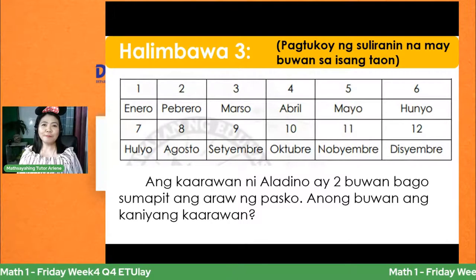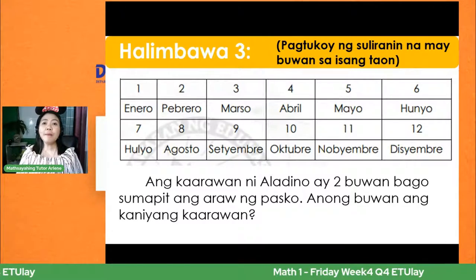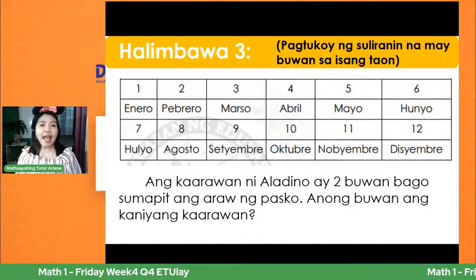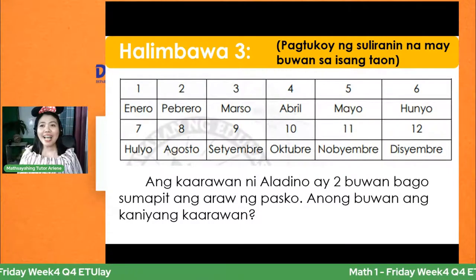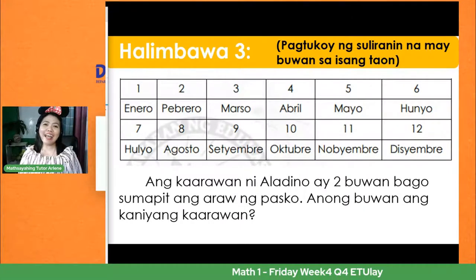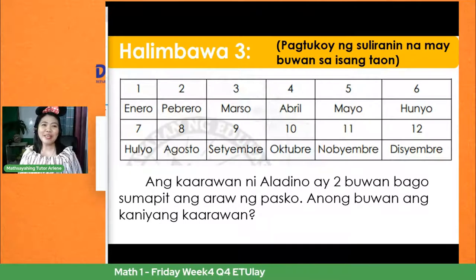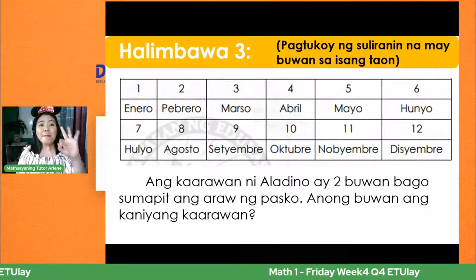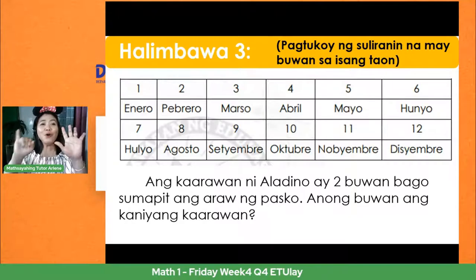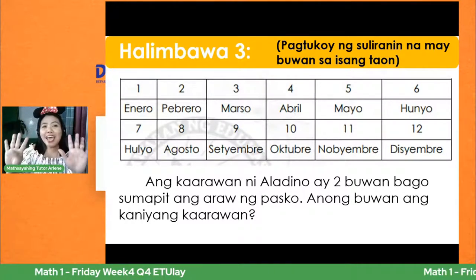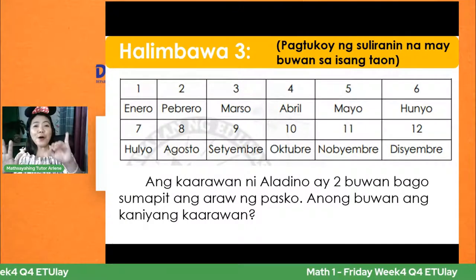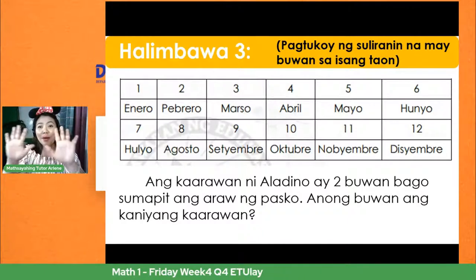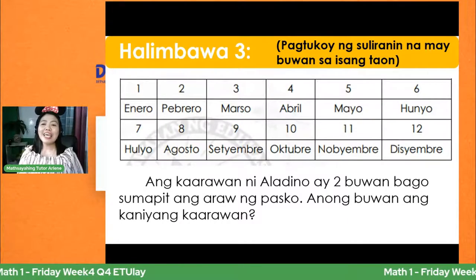Ikatatlo nating paglutas: pagtukoy ng suliranin na may buwan. Naaalala pa ba natin ang buwan sa isang taon? Kantayin natin: Enero, Pebrero, Marso, Abril, Mayo, Hunyo, Hulyo, Agosto, Setyembre, Oktubre, Nobyembre, Disyembre — 12 months in a year.